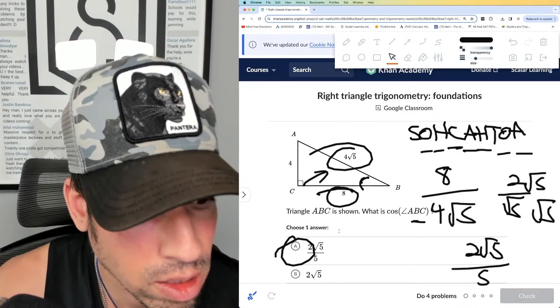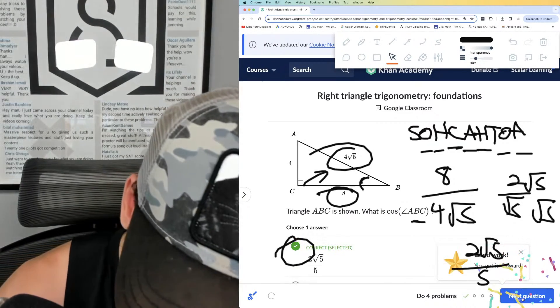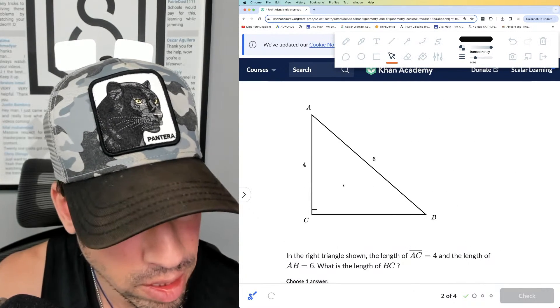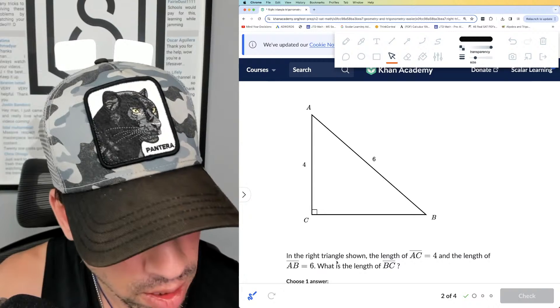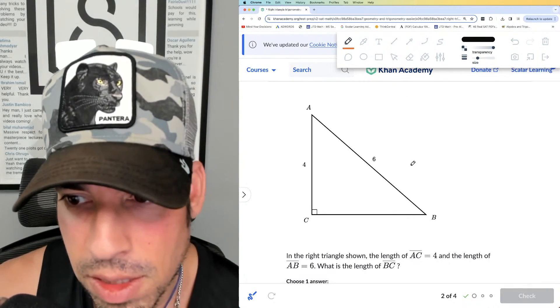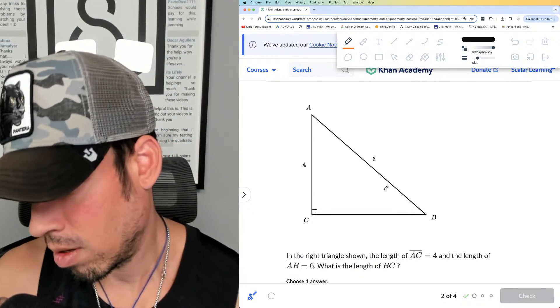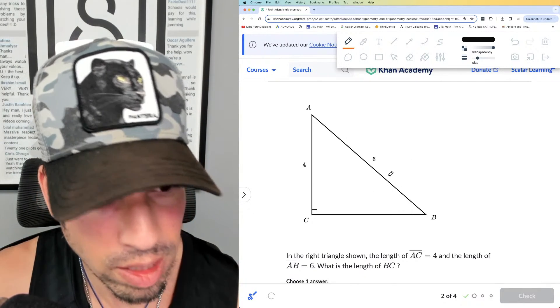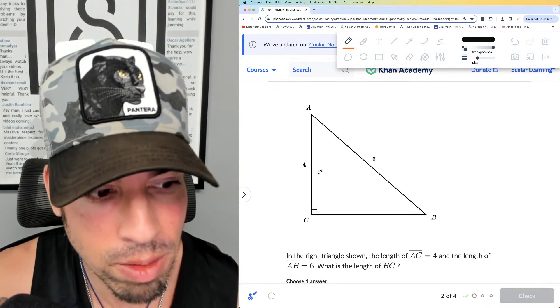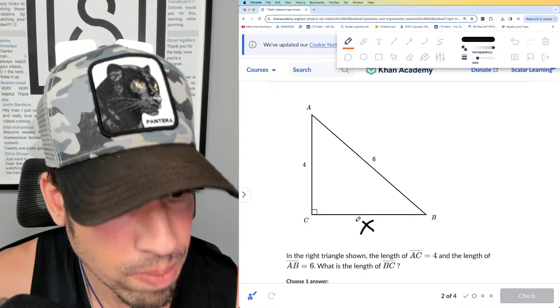All right, next. In the right triangle shown, the length of AC equals 4 right here, and the length of AB is 6. What is the length of BC? All right, this is a Pythagorean theorem problem, right. We don't even need, per se, like sine, cosine, or tangent—although you could, I suppose, do it in a roundabout way. But the best way is, this is our x, right, that's one of the legs, that's another leg, that's the hypotenuse.